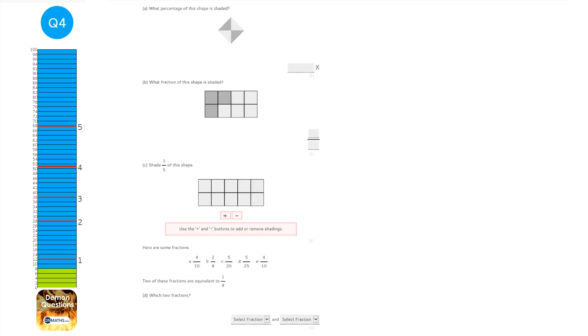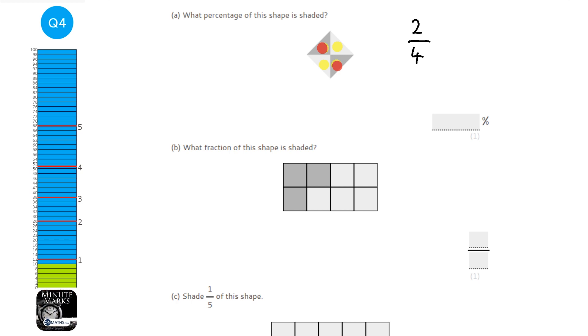When working out a fraction or percentage of a shape, first count how many equal chunks you have. We have four equal chunks, so the denominator is 4. Two of those are shaded, giving 2 over 4, which simplifies to 1 over 2. As a percentage, a half is 50%: a whole is 100%, so half of 100 is 50%.